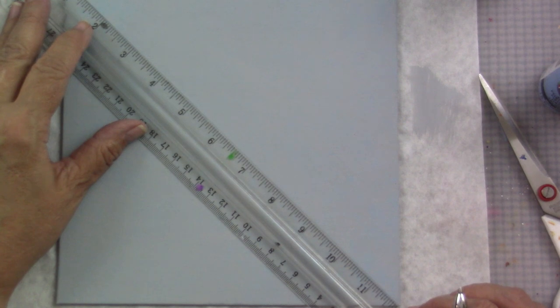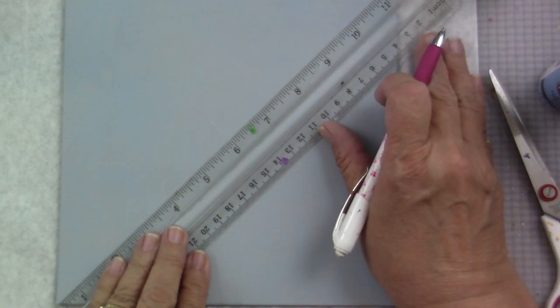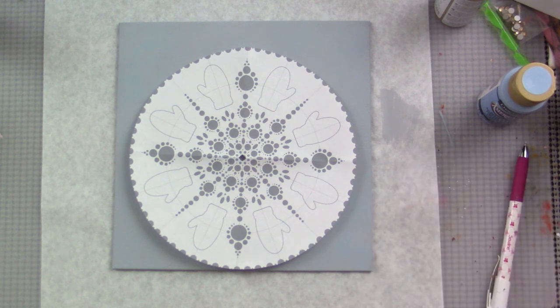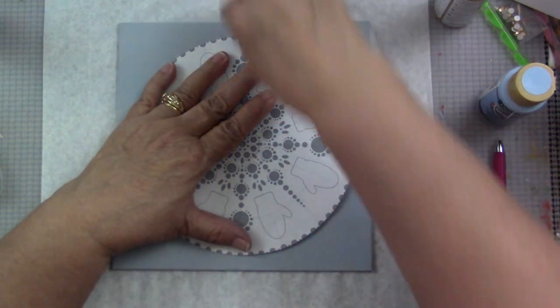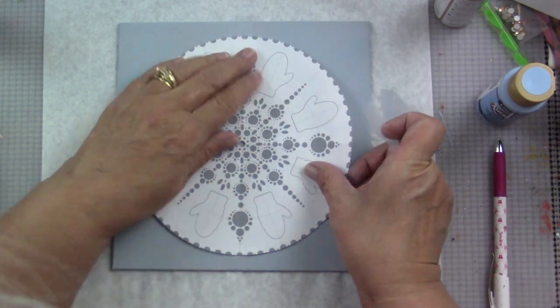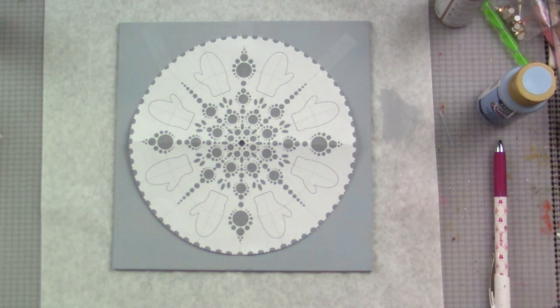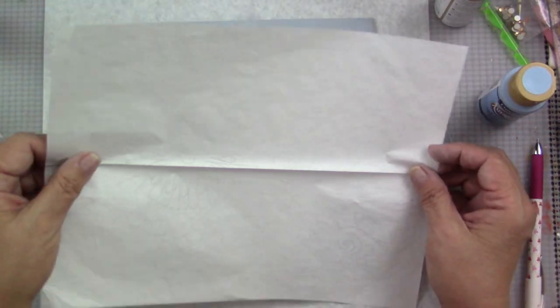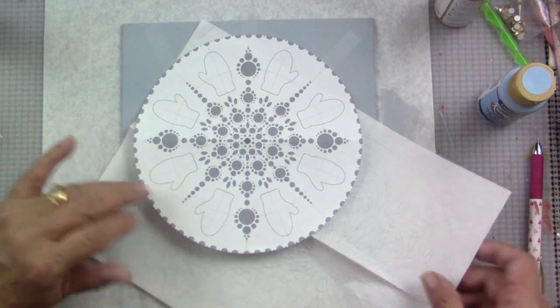Using a ruler, I will find the center of the canvas, and this is just to help me line this up. I'm basically going to use that to line my pattern up. A little bit of tape once I get it lined up, and that tape will keep it from slipping as I draw my pattern on.